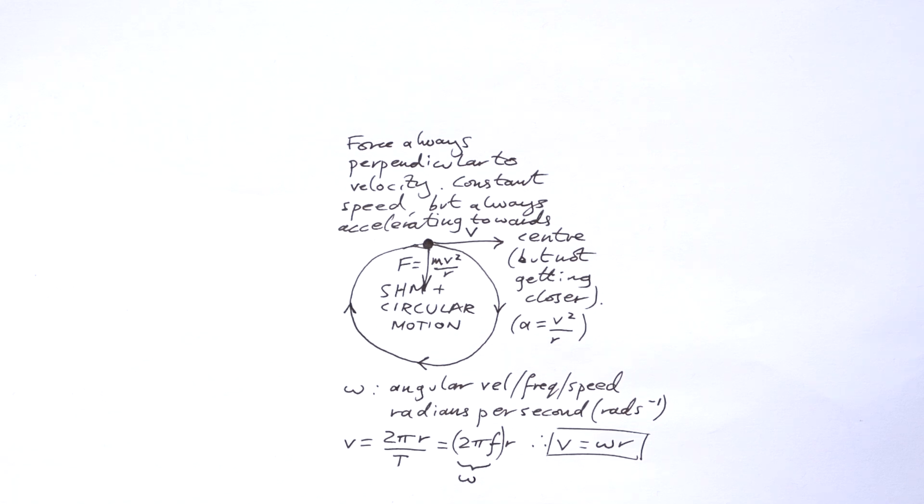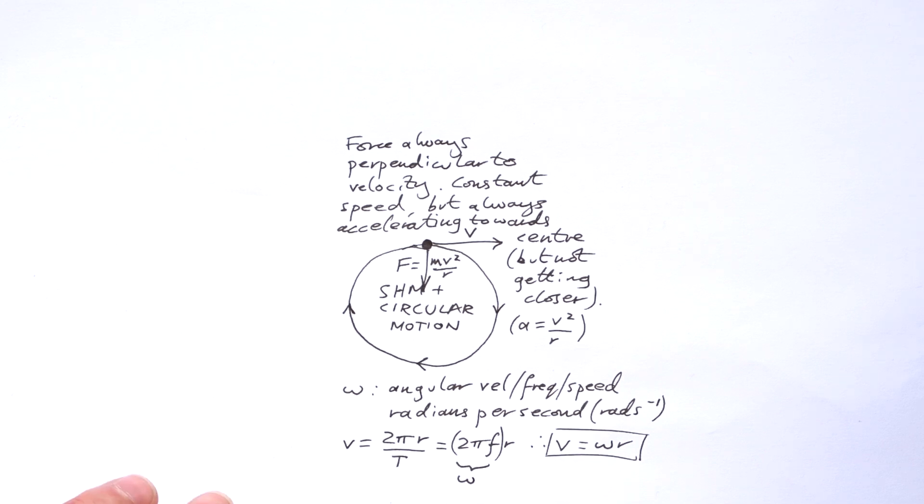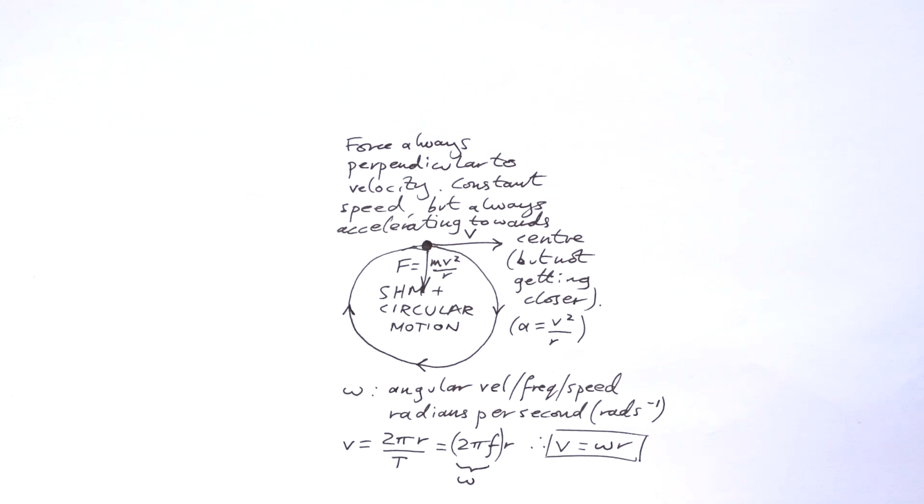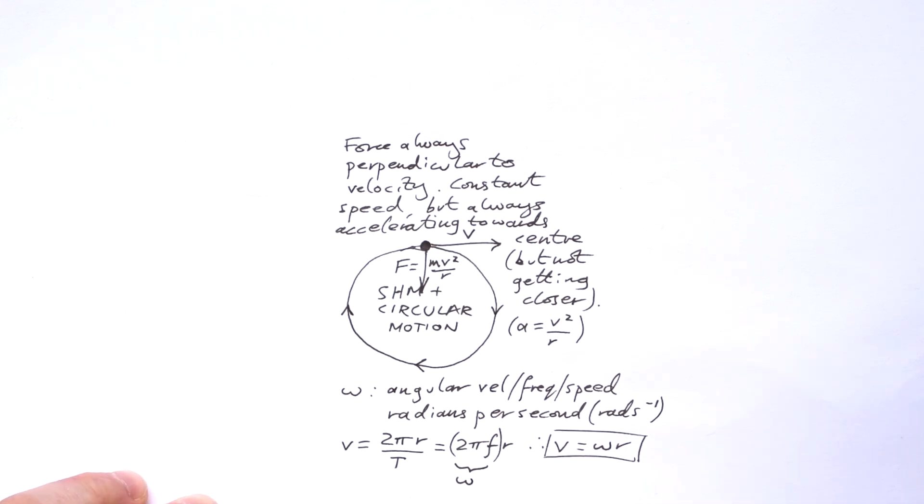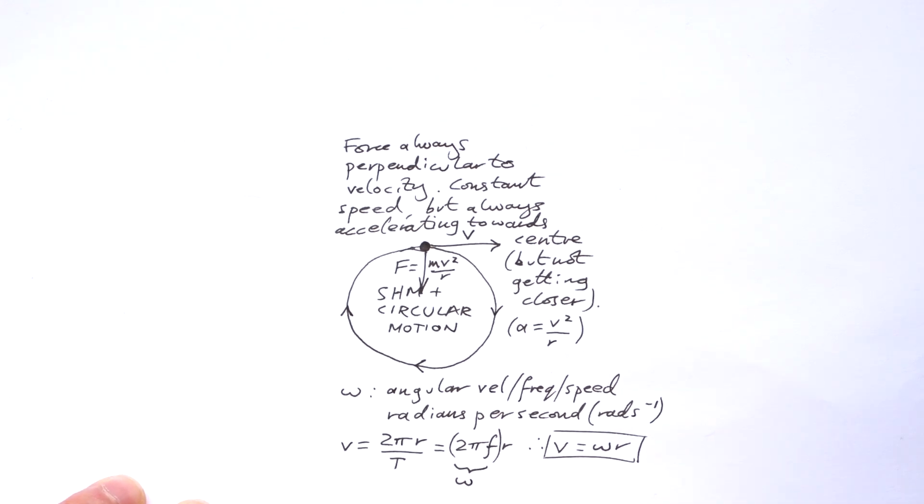And I've forgotten to write in how we substitute that into our centripetal force equation, but I have added it into the PDF. If v equals omega r, substituting that into our centripetal force equation, we end up with F equals m omega squared r.